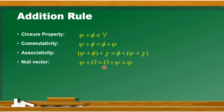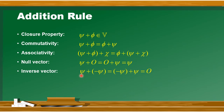And the last property in the addition rule is inverse vector. अब inverse vector क्या होगा? आपके पास कोई भी एक element है, vector space का vector है, तो उसके corresponding एक और vector ऐसा exist करेगा कि जिसको इस original vector में add करें, either on right side or on left side, तो result एक null vector मिलेगा. तो इस psi को negative psi का additive inverse, और negative psi को psi का additive inverse कहा जाएगा.